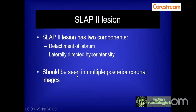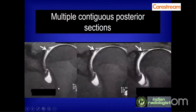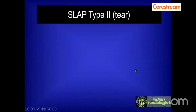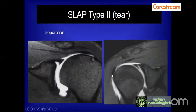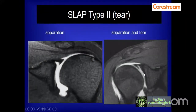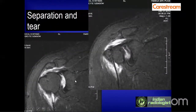SLAP 2 lesion can be either a tear type or detachment type, and should be seen in multiple consecutive posterior coronal images from anterior to posterior. This is one of the important features differentiating it from sub-labral recess. The separation type shows the labrum intact but separated by a distance from the glenoid attachment; if this distance measures more than 2-3 mm, it qualifies as a separation type SLAP 2 tear. Laterally directed hyperintensity is a hallmark of the torn labrum in SLAP 2.